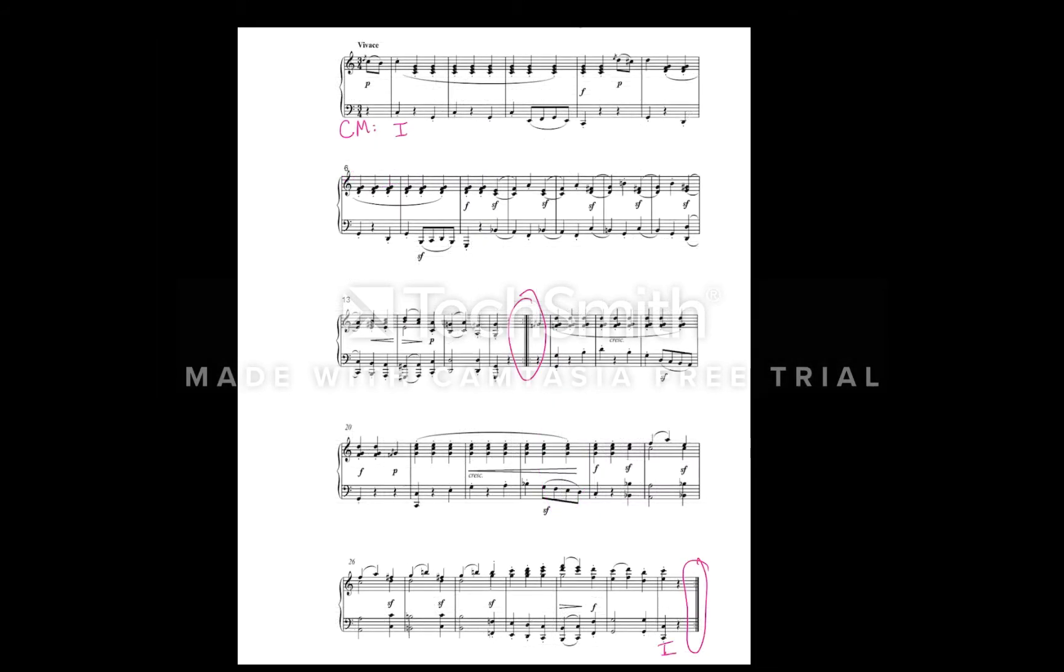We can now use what we've heard and what we see on the score to determine what type of binary form this is. To determine whether we have a sectional or continuous binary form, we need to look at the end of the first A section, which is right before the first repeat.